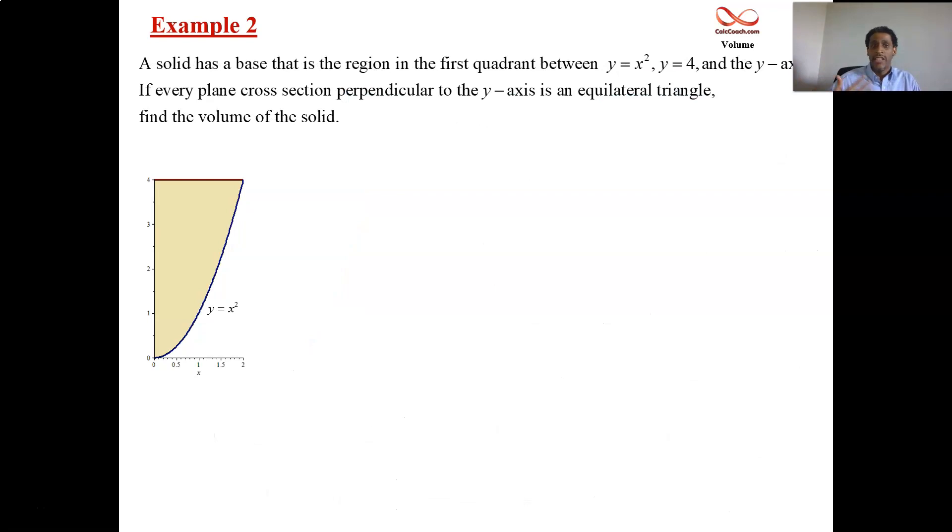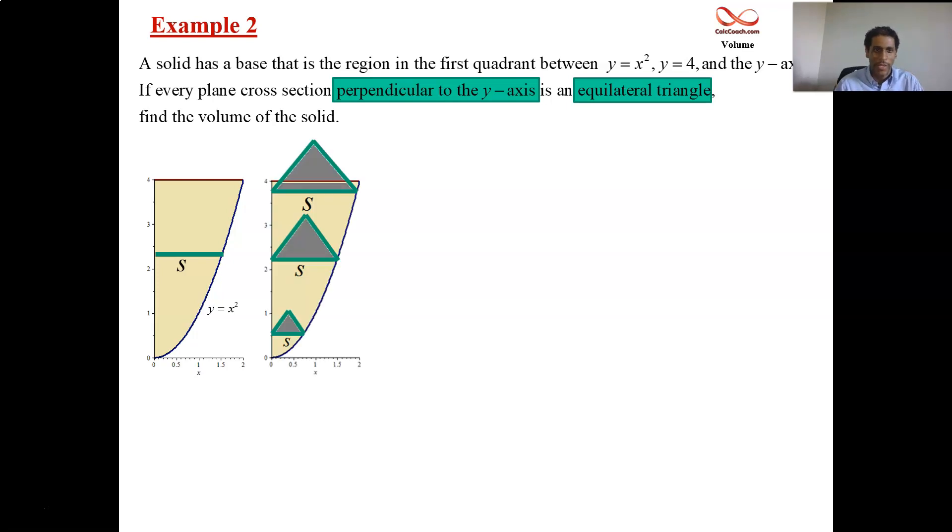Example two. Same question, same region. But we're slicing perpendicular to the y-axis. So the slices look like that. Still equilateral triangles. That's not going to change. I don't have as sophisticated drawing as I do before, but there we go. The lower that y is, the smaller the area is. The higher y is, the higher the area is. But this time, it's not the distance off of the x-axis that we're using. It's the distance off of the y-axis. But it's still a slice. It's called S. We know the formula for the area of an equilateral triangle based on S.